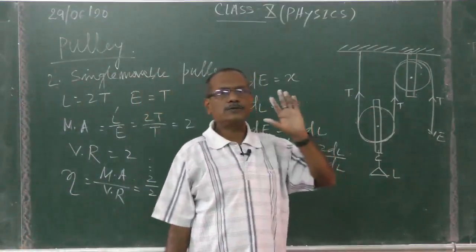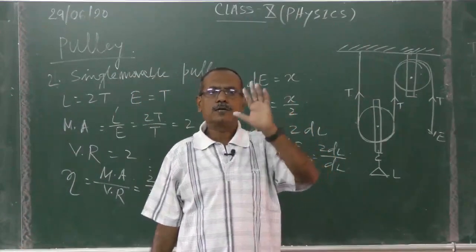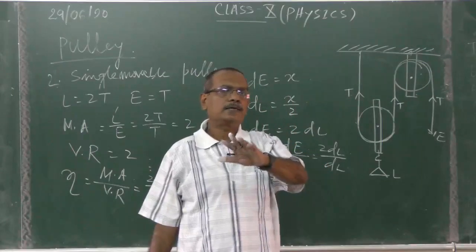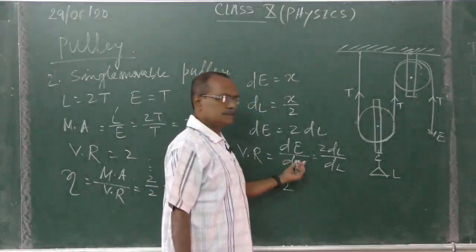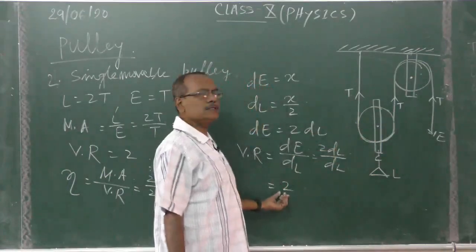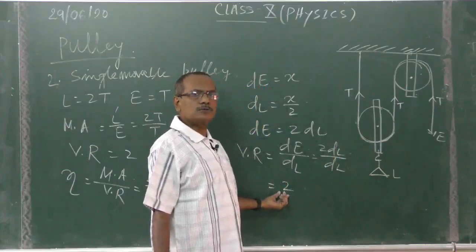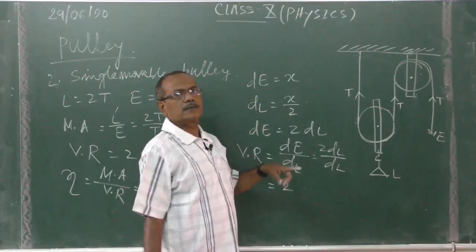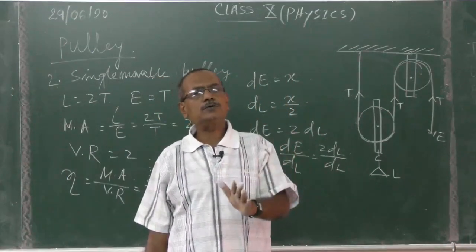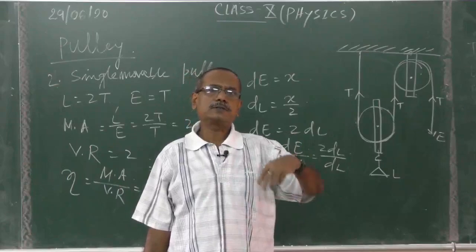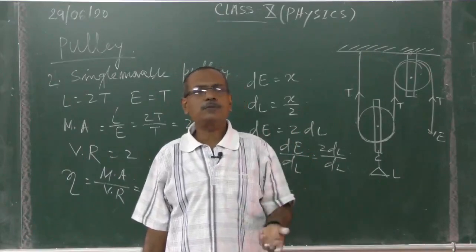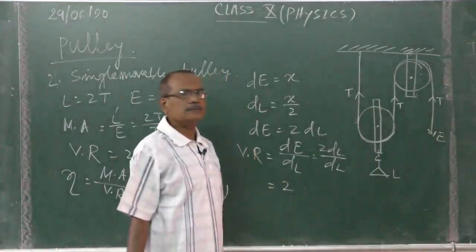For a machine, I told earlier also, velocity ratio for a particular machine is same, it will not change. For single movable pulley, velocity ratio is always 2, but mechanical advantage for ideal pulley system will be equal to 2. If it is actual case we will consider, in actual practice it will be less than 2.